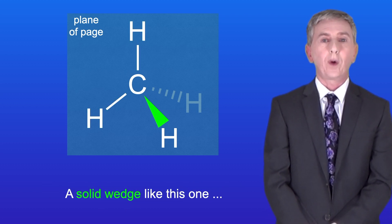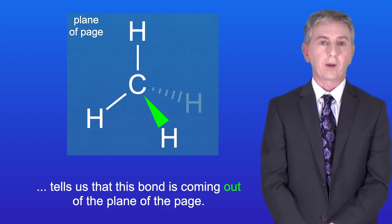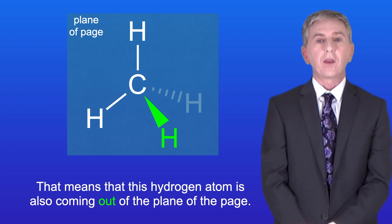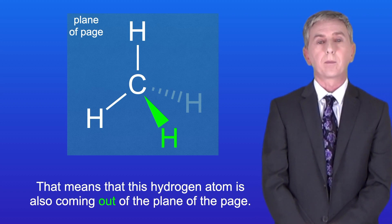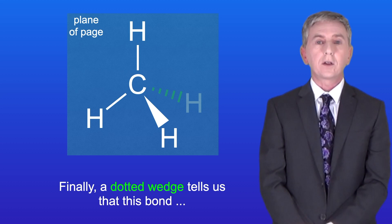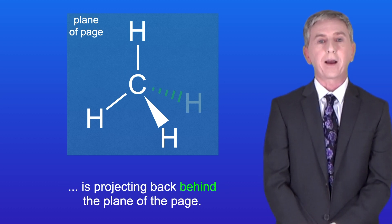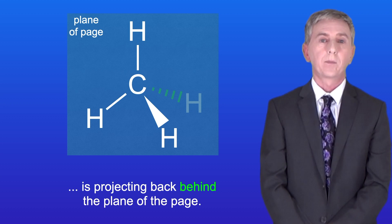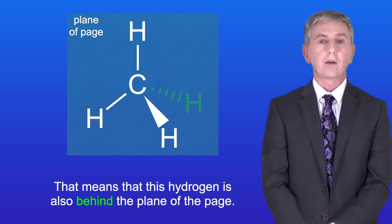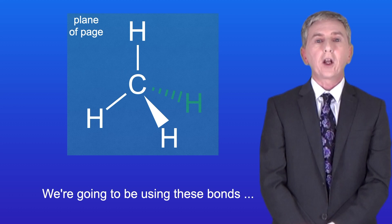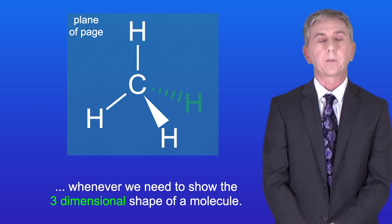A solid wedge tells us that a bond is coming out of the plane of the page, so that hydrogen atom is also coming out of the plane of the page. A dotted wedge tells us that a bond is projecting back behind the plane of the page, so that hydrogen is also behind the plane of the page. We'll use these bonds whenever we need to show the three-dimensional shape of a molecule.